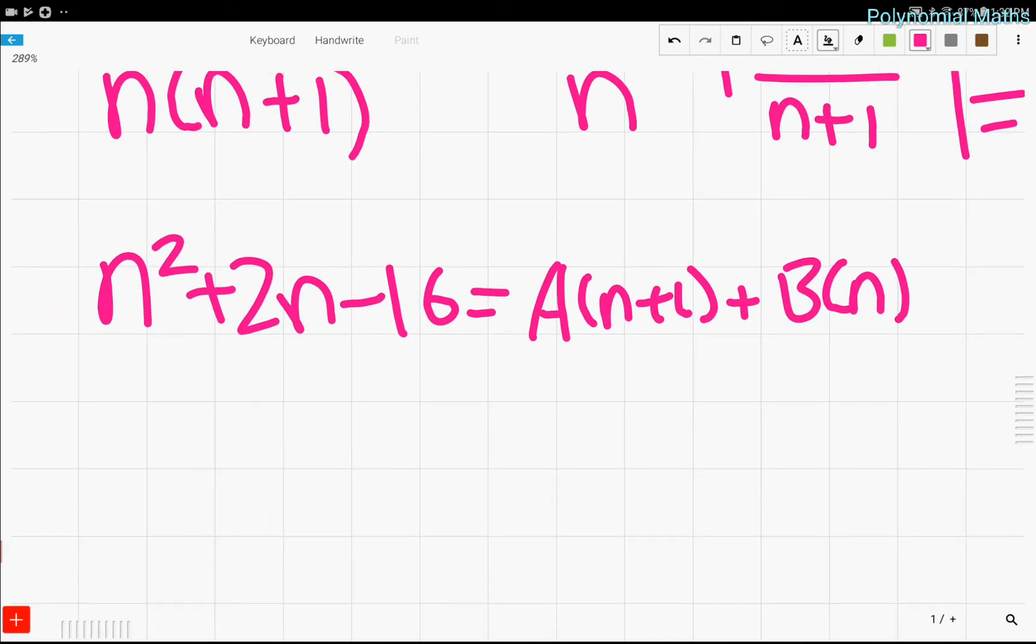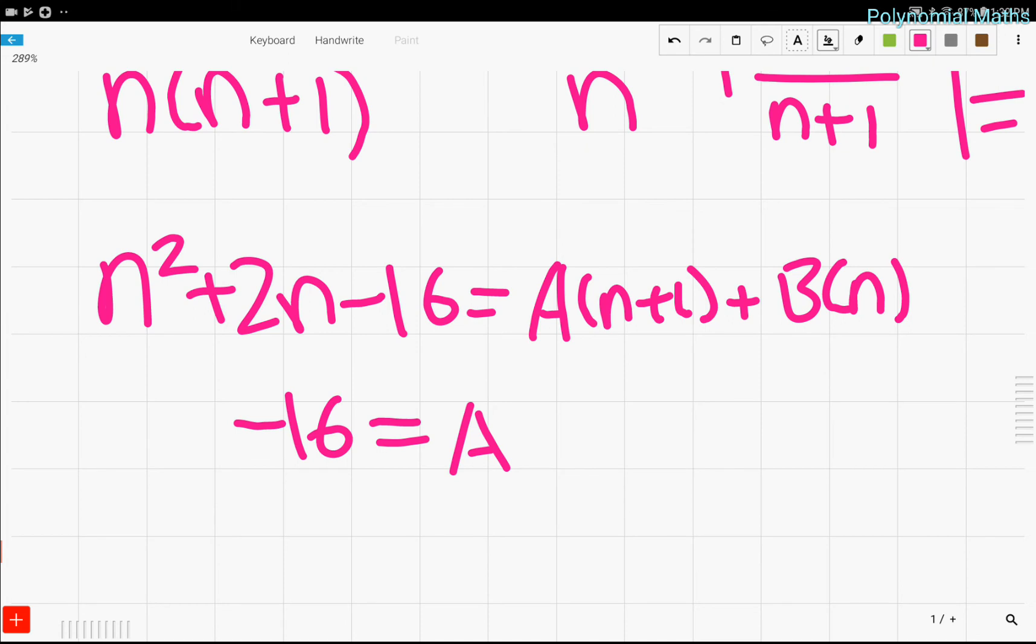So, again, we do the heavy side cover-up method and we can plug in values of n to solve. So, first, let's just plug in 0, which is easy. So, we have negative 16 equals a because the b gets canceled out earlier. So, we're left with a equals negative 16. So, that's one of our solutions.